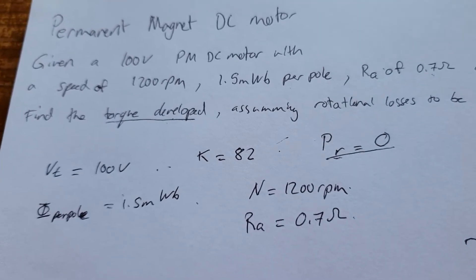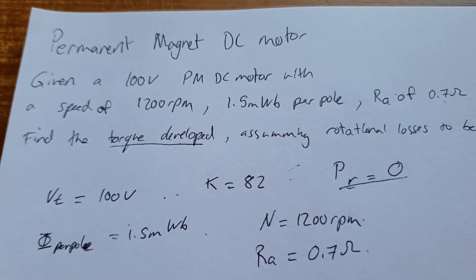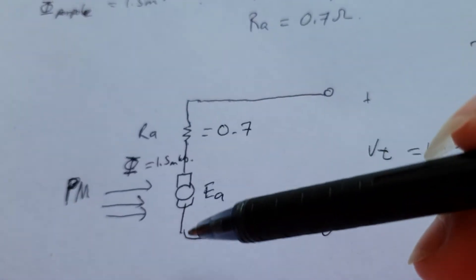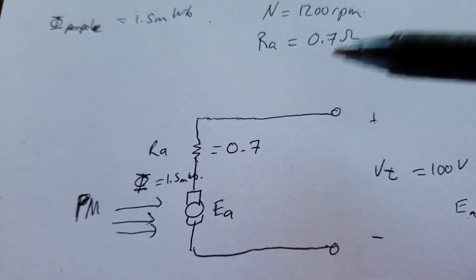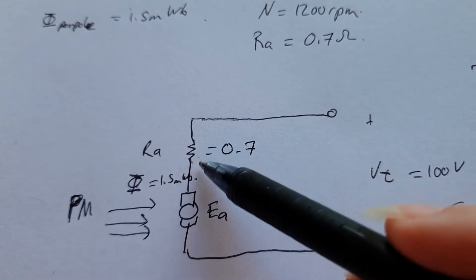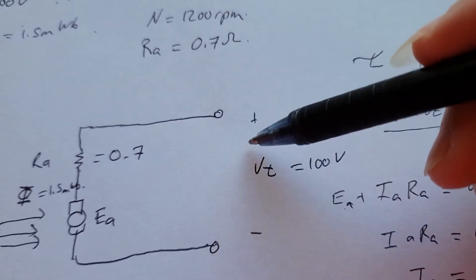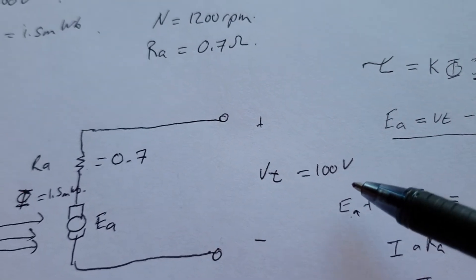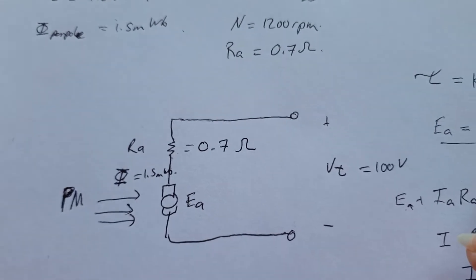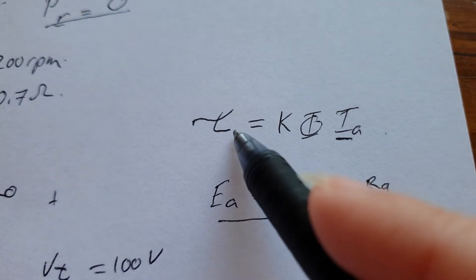The first thing we're going to do is draw the equivalent circuit diagram of the DC motor so we can see what we're doing and what formulas we need to work with. Here I've drawn the circuit diagram — it's very simple as motors go. We have our armature resistance in series with EA, with lines to indicate the permanent magnet and the flux, and across these two points is our terminal voltage. Now let me just add in the units.